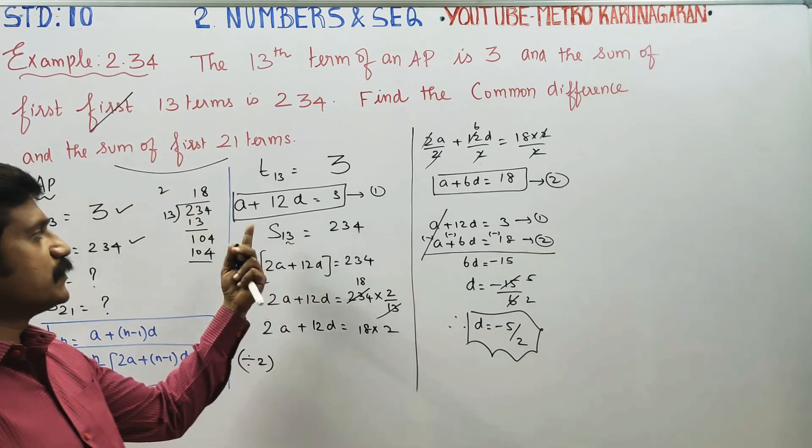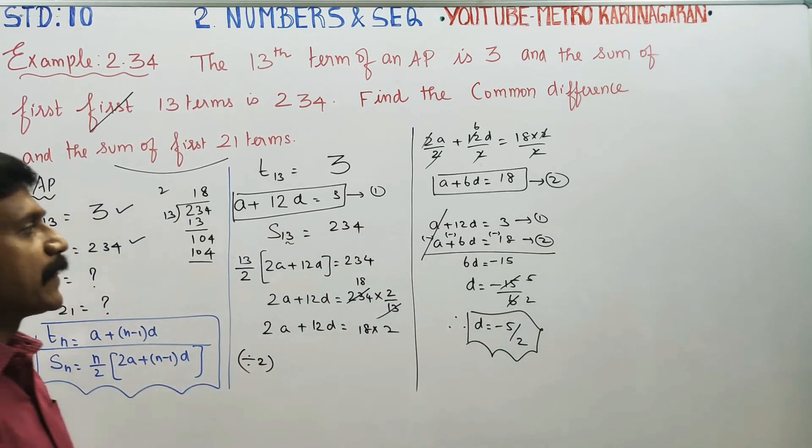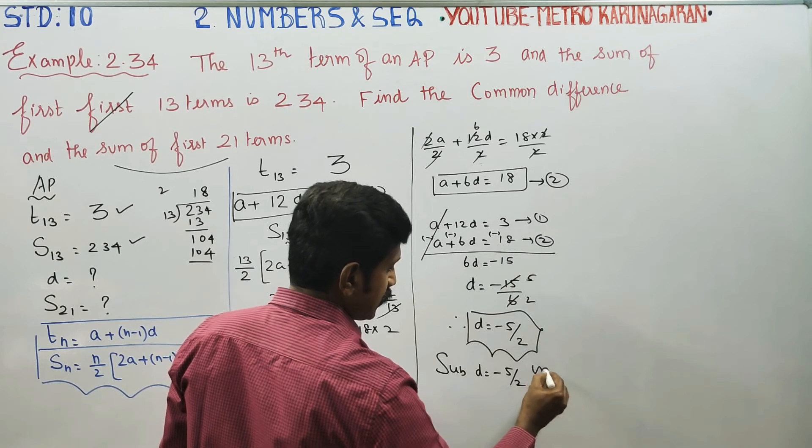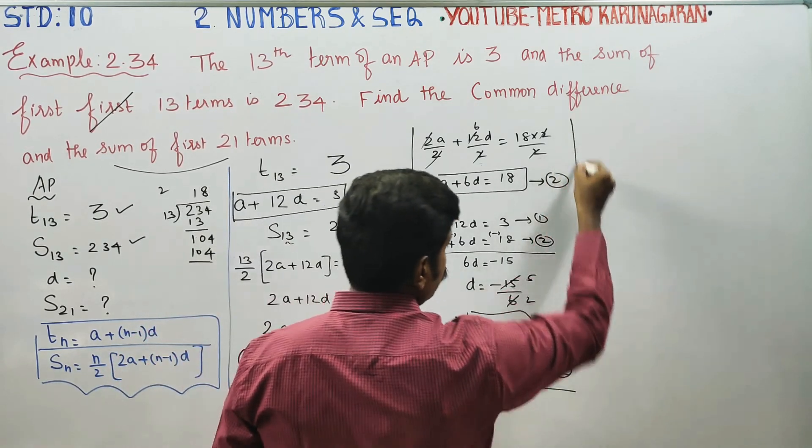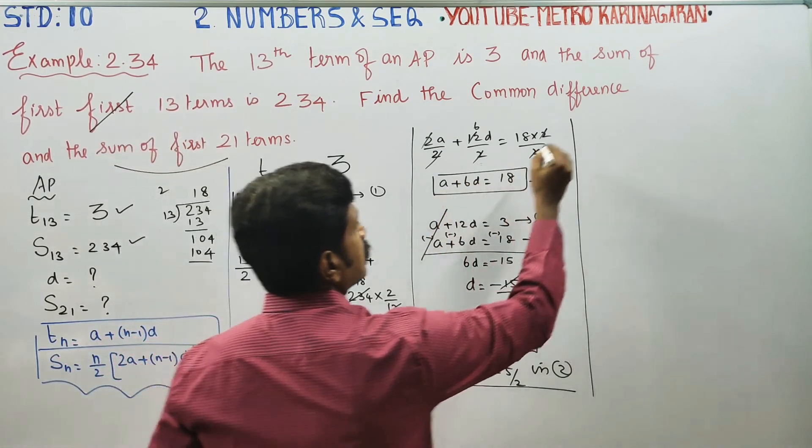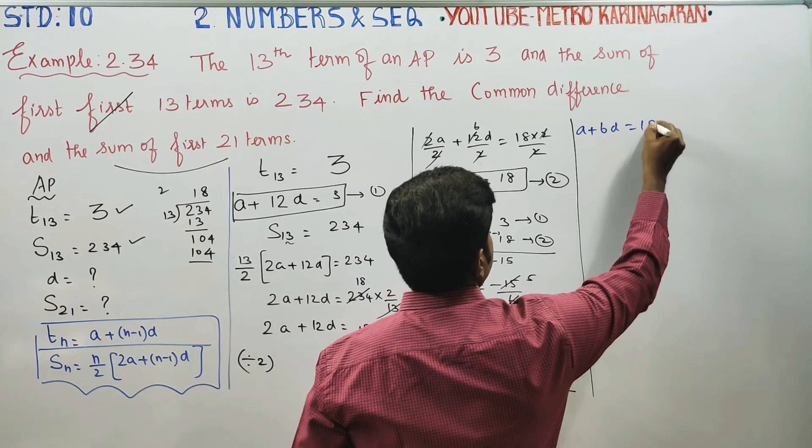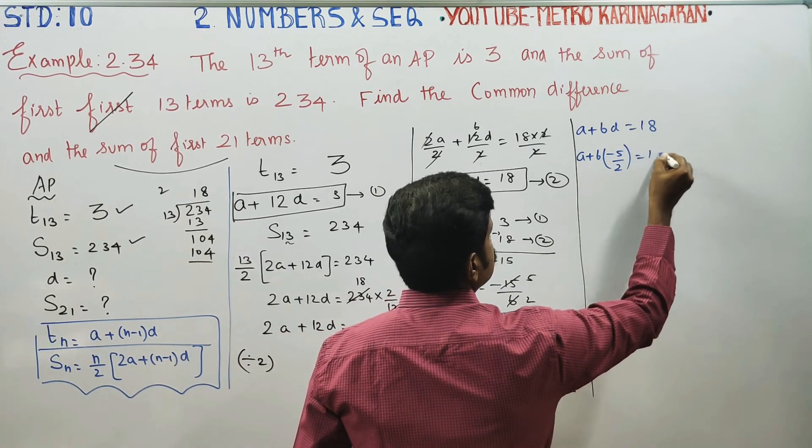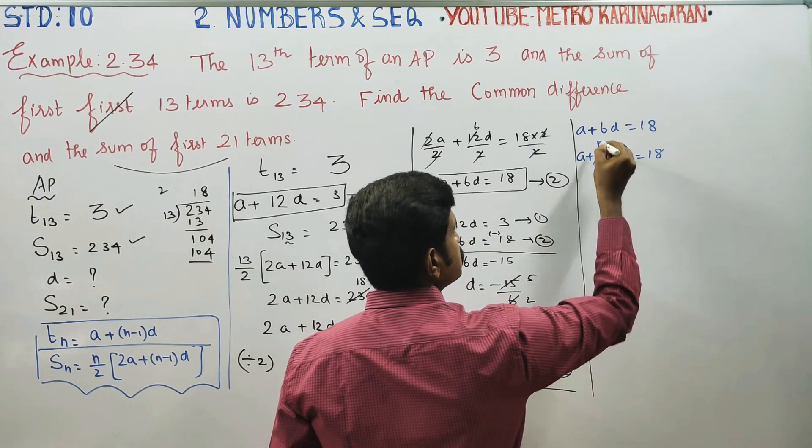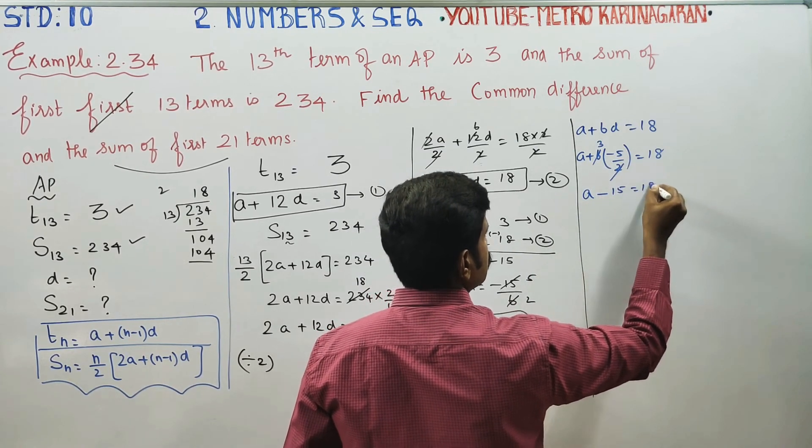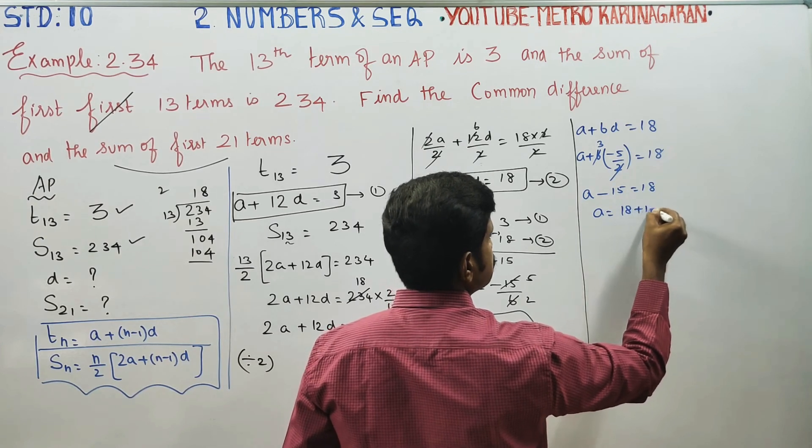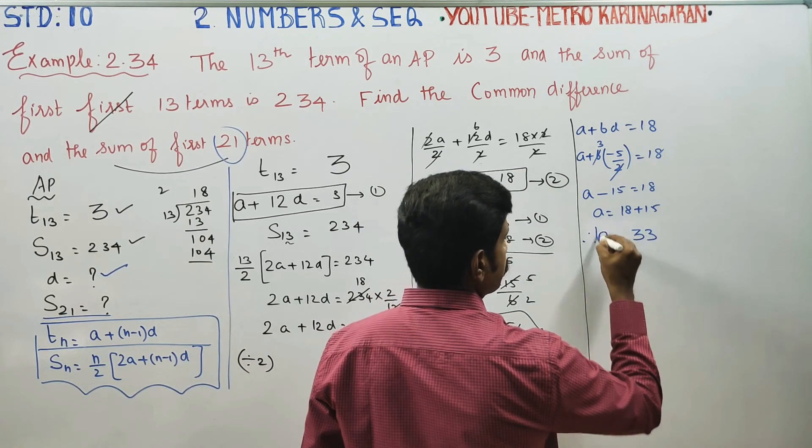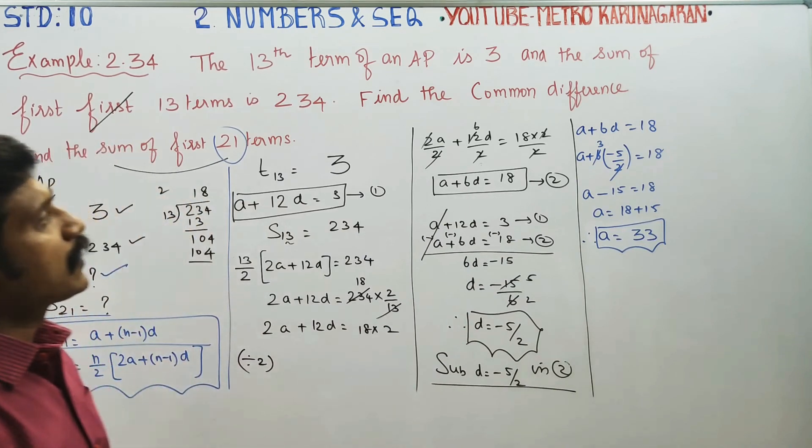Now substitute D equals minus 5 by 2 into equation 2: A plus 6 times minus 5 by 2 equals 18. This gives A minus 15 equals 18. Therefore A equals 33.